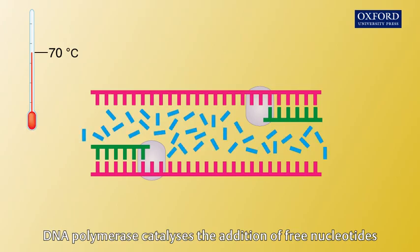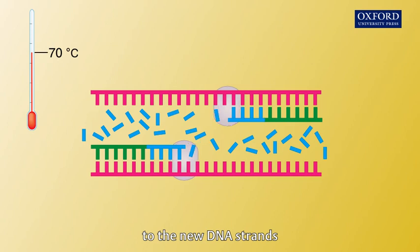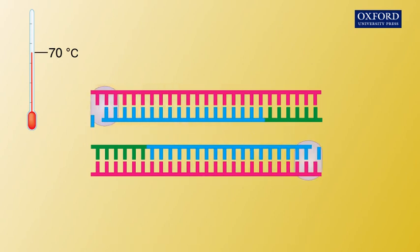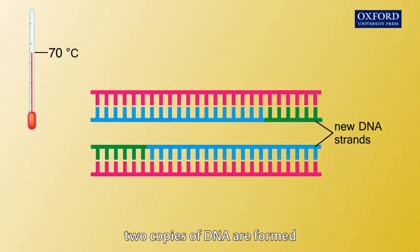DNA polymerase catalyzes the addition of free nucleotides to the new DNA strands using the original strands as templates. Thus, in the end, two copies of DNA are formed.